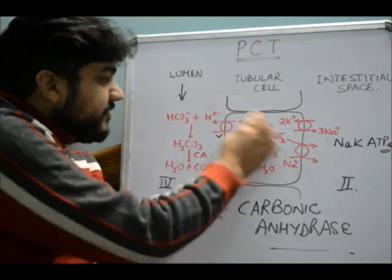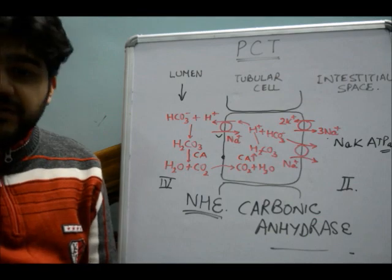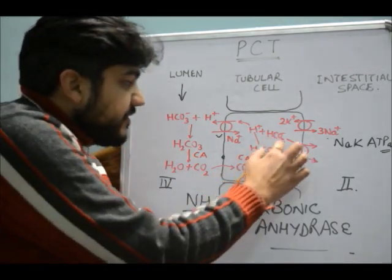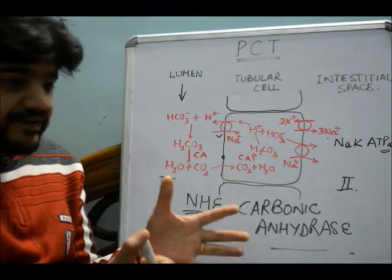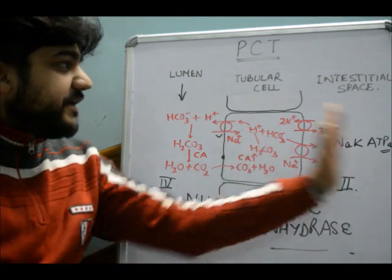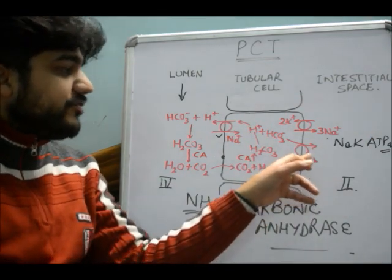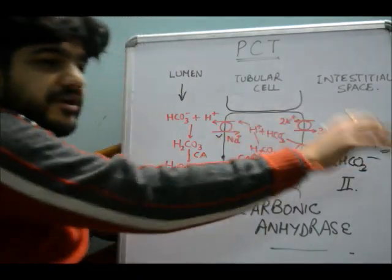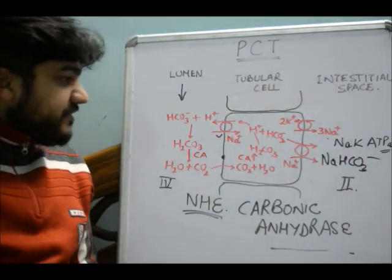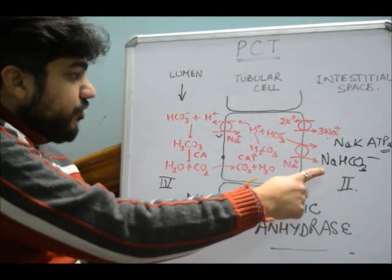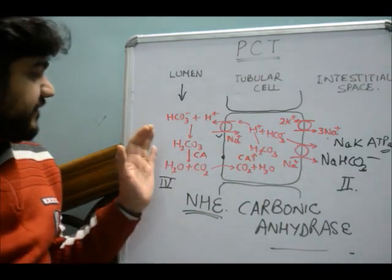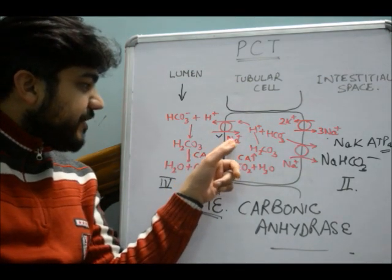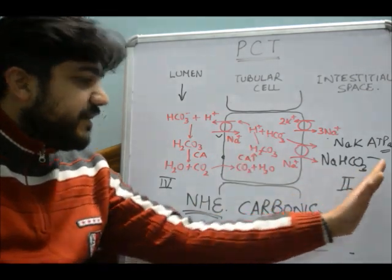The end result is an excess of bicarbonate ions inside the luminal cell. There is one symporter — bicarbonate goes down its concentration gradient into the interstitial space, taking along sodium. So sodium bicarbonate is removed from the cell into the interstitial space. This is how sodium is reabsorbed and bicarbonate is reabsorbed, and other things are recycled.